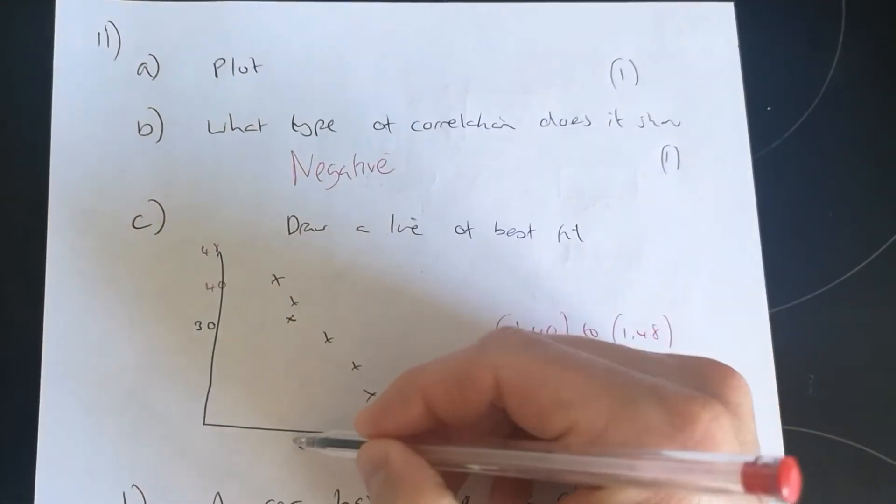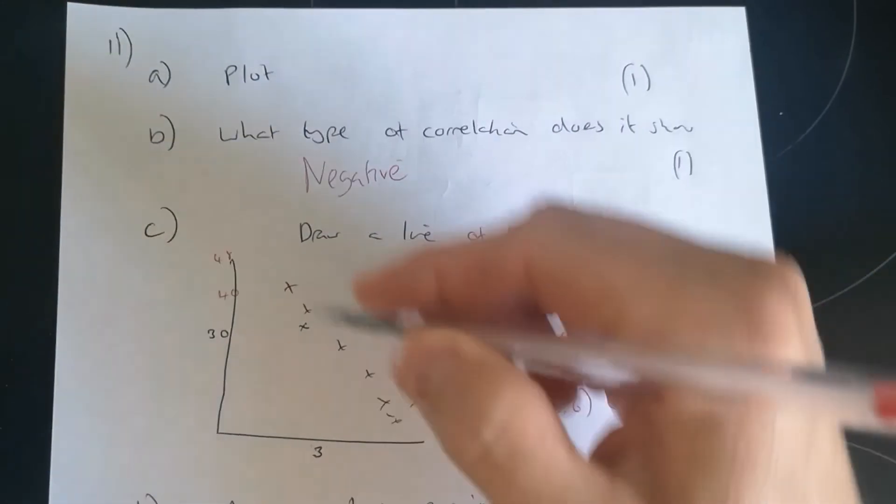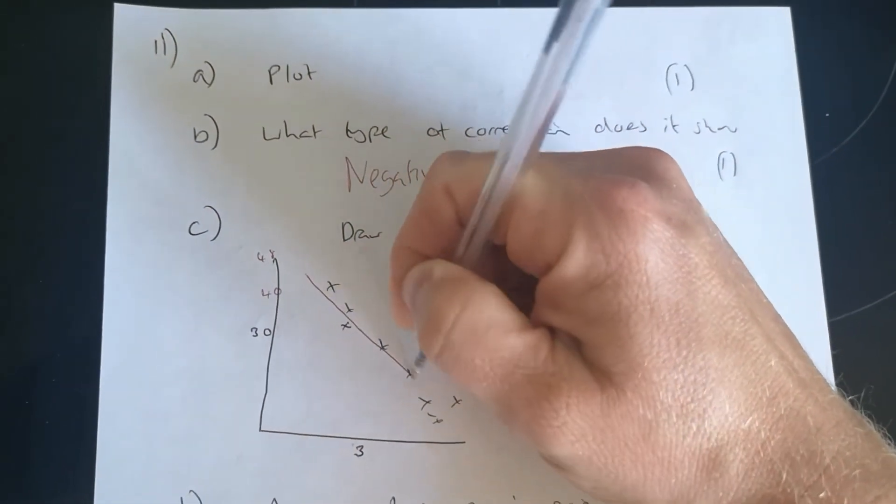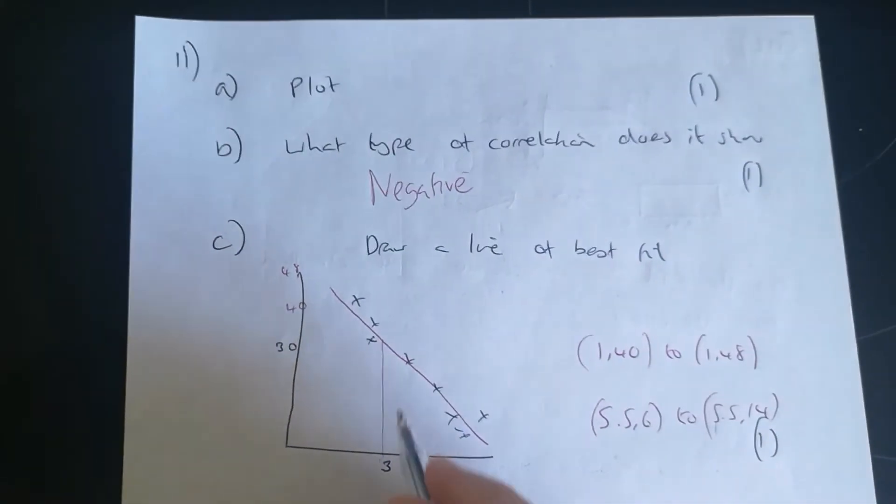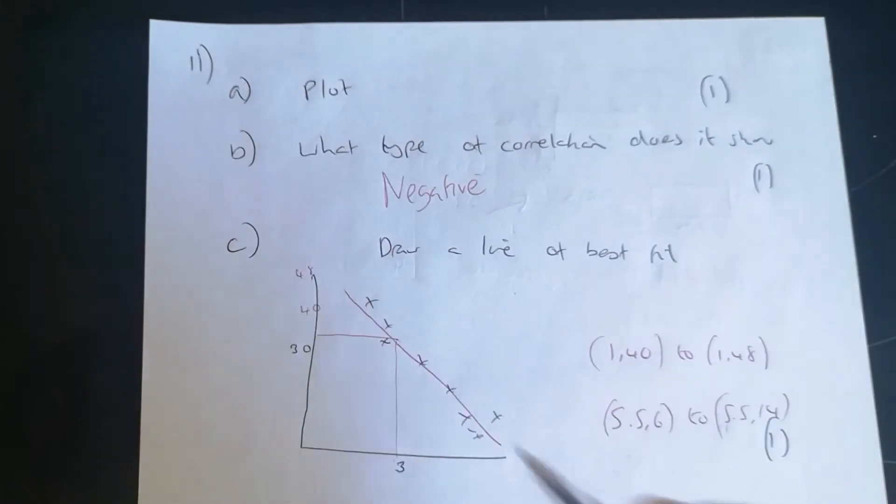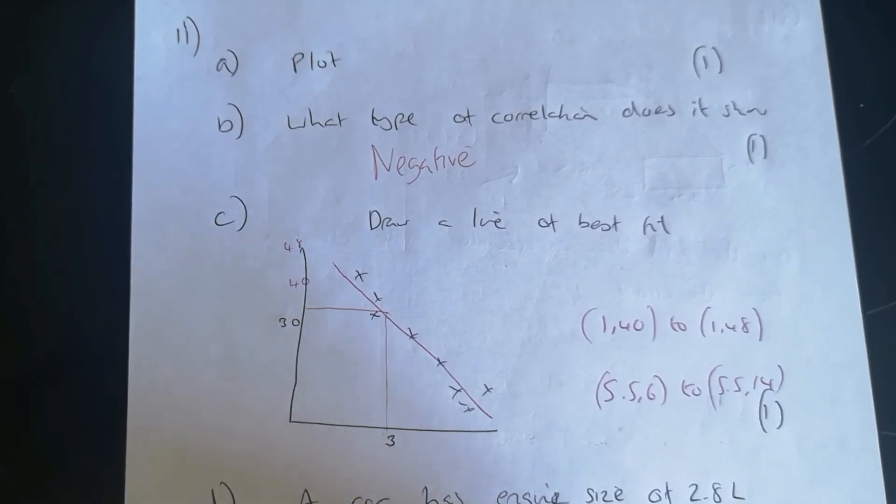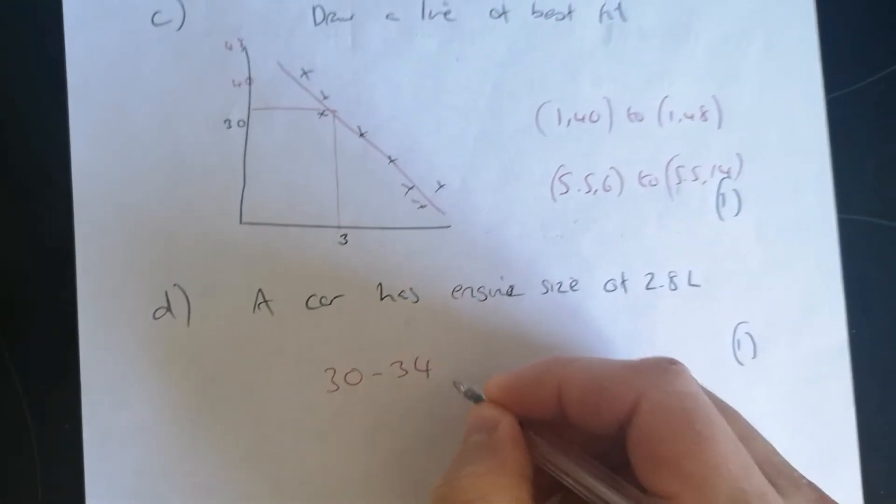Now, you go up from 2.8 litres up to where your line will be. Okay, I'm just going to draw my line, make sure you do it with a ruler. You go up from 2.8 and you read off across here, and you end up with it being 30 to 34 miles per gallon.